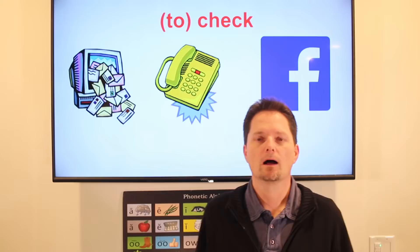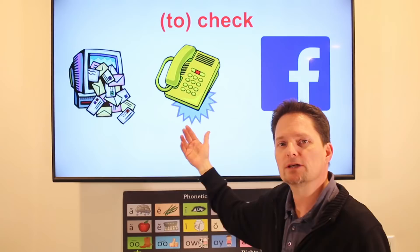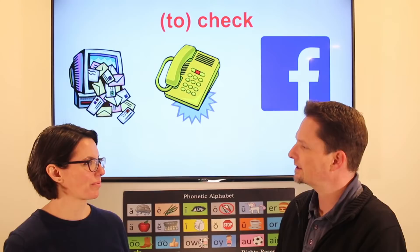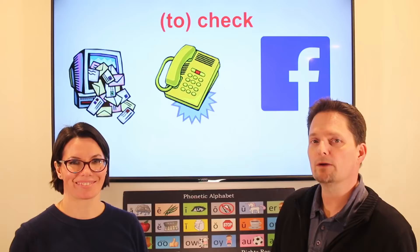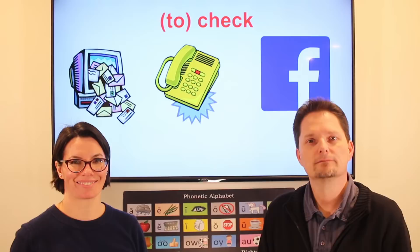After I go over my schedule, I check. Use the action 'check.' I check my emails, I check my messages, and I check my social media. What do you do after you go over your schedule? After I go over my schedule, I check my emails, I check my messages, and I check my social media too.